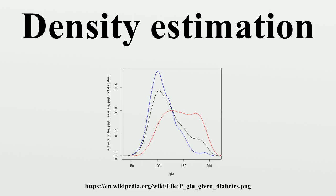x <- seq(50, 250, length=250); y <- p.d.given.glue(x); plot(x, y, type='l', col='blue', xlab='glue', ylab='estimated p(diabetes|glue)', main=''); lines(glue.density.D0, col='red')